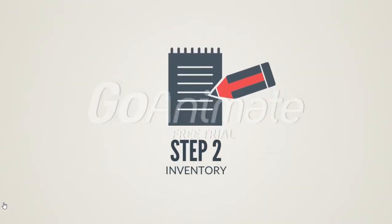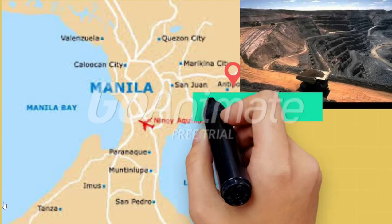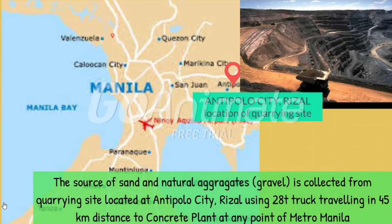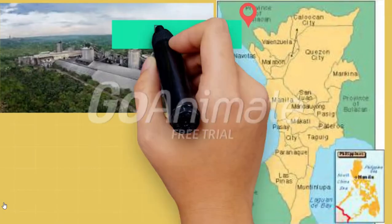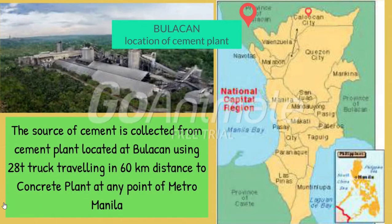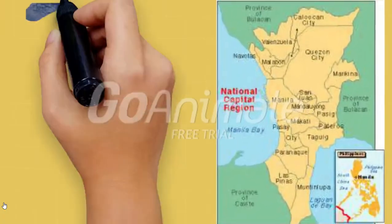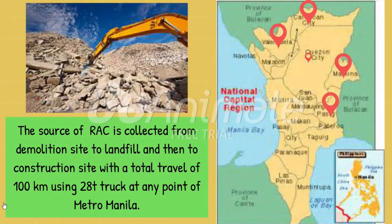Step 2 - Inventory: The source of sand and gravel is collected from a quarry site located at Rizal using a 28T truck traveling 45 km distance to the concrete plant at any point of Metro Manila. The source of cement is collected from a cement plant located at Pelecan using a 28T truck traveling 60 km distance to the concrete plant. The source of RCA is collected from a demolition site to landfill and then to the construction site, with a total travel of 100 km using a 28T truck at any point of Metro Manila.